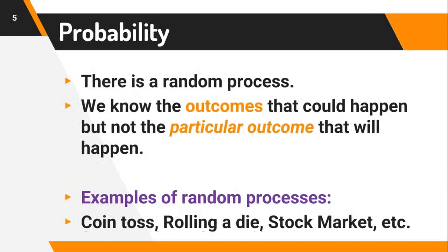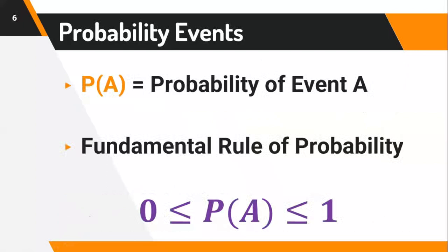In every random process, we know the outcomes that could happen, but not the particular outcome that will happen. For instance, whenever you toss a coin, you know the outcomes could be heads or tails, but you would not know which particular outcome will happen. Examples of random processes include coin toss, rolling a die, or even the stock market. For this class, we adopt the notation P(A) as the probability of any event A.